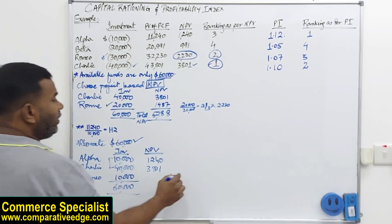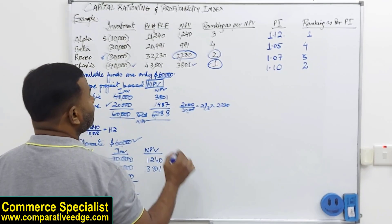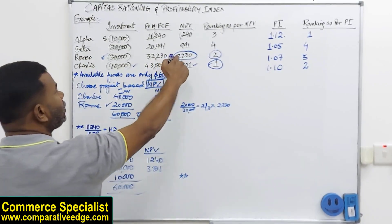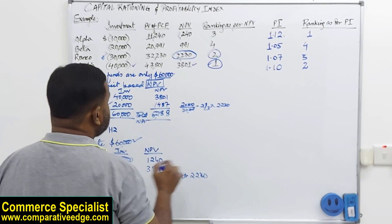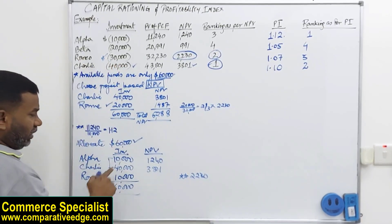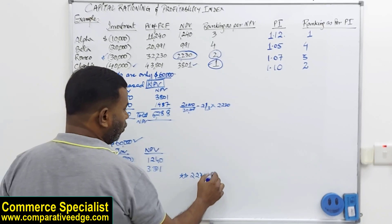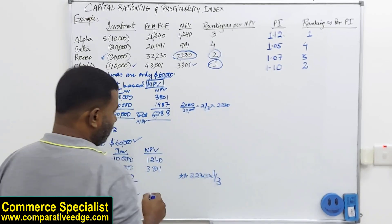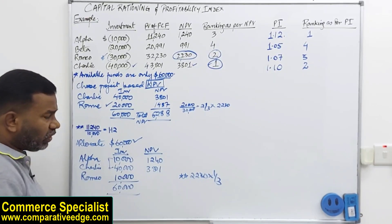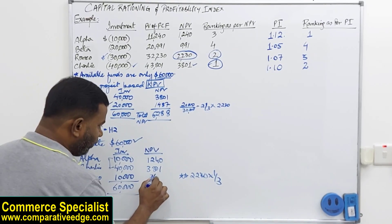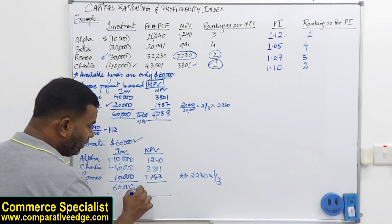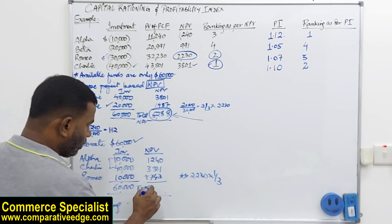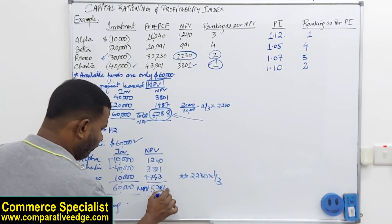But the NPV which is 2,230, because I am not investing 30, I am only investing 10, so I have to take one-third of this. So one-third of 2,230 will give me 743. So when I add all this, this will give me a total NPV of 5,784.